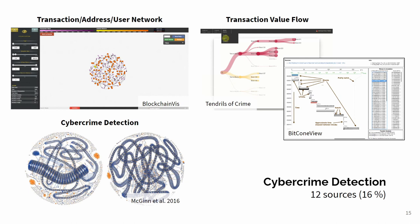The fourth task domain is cybercrime detection. This task is usually overlapped with transaction network analysis, with a focus on detecting fraudulent activity and cyberattacks in the blockchain. For example, you can use transaction network tools to visualize a block and detect cyberattacks, as in the example from McGinn and Arthur's article, or use transaction value flow tools to follow a thief from a suspicious transaction.